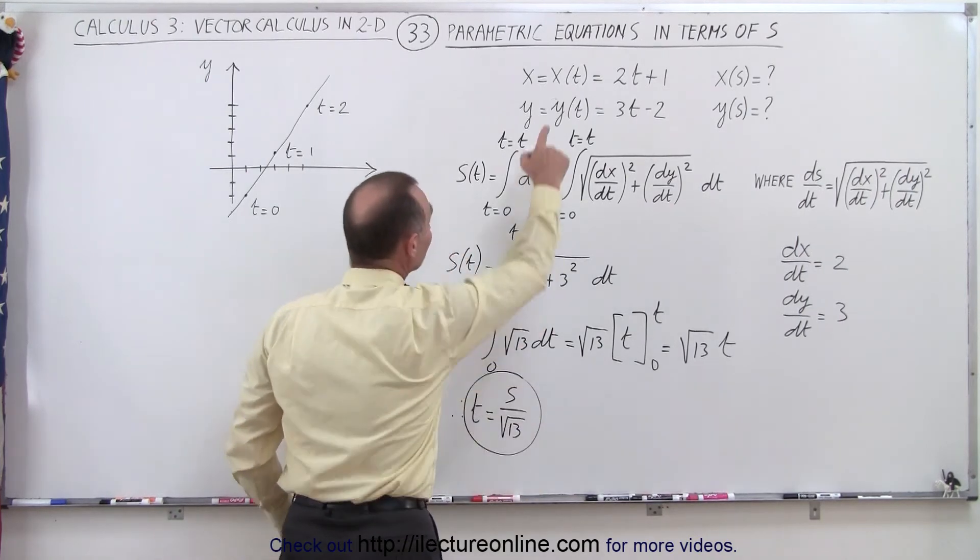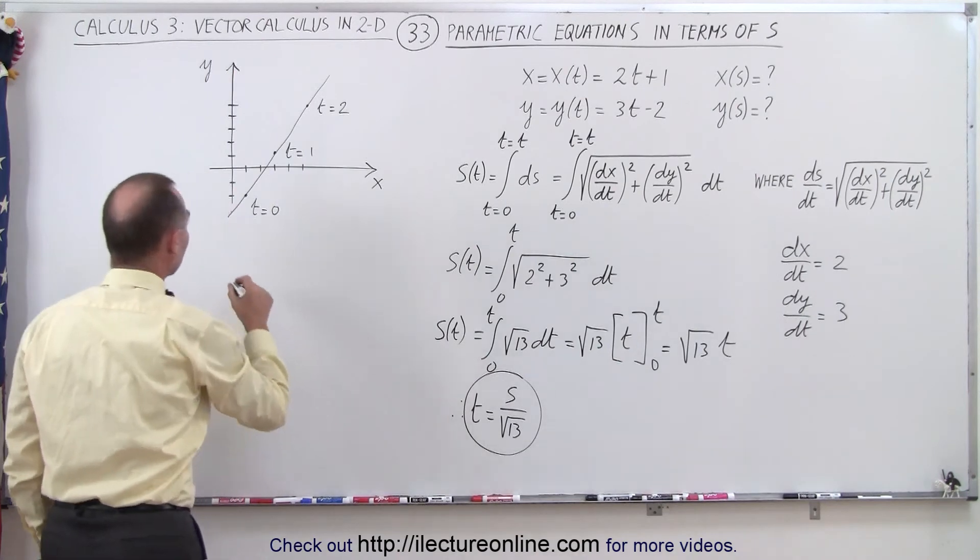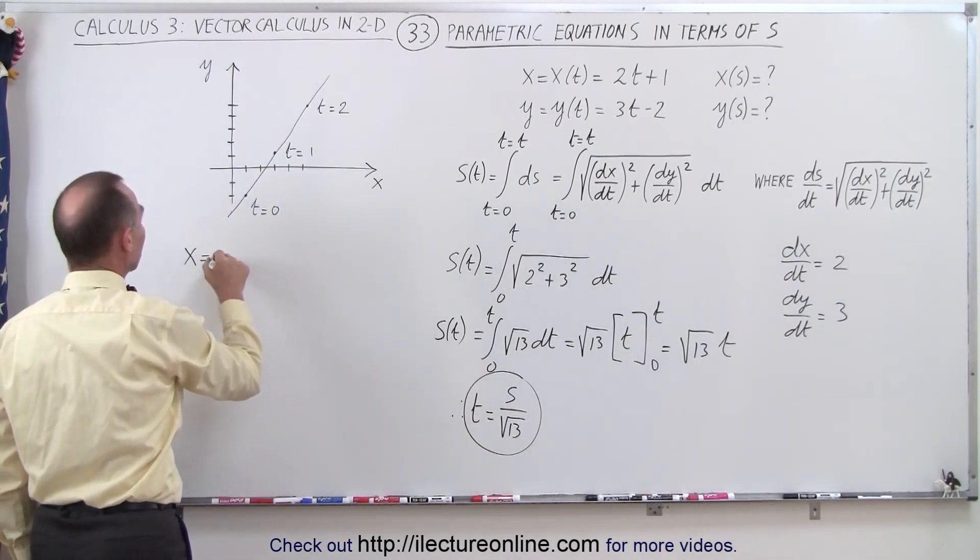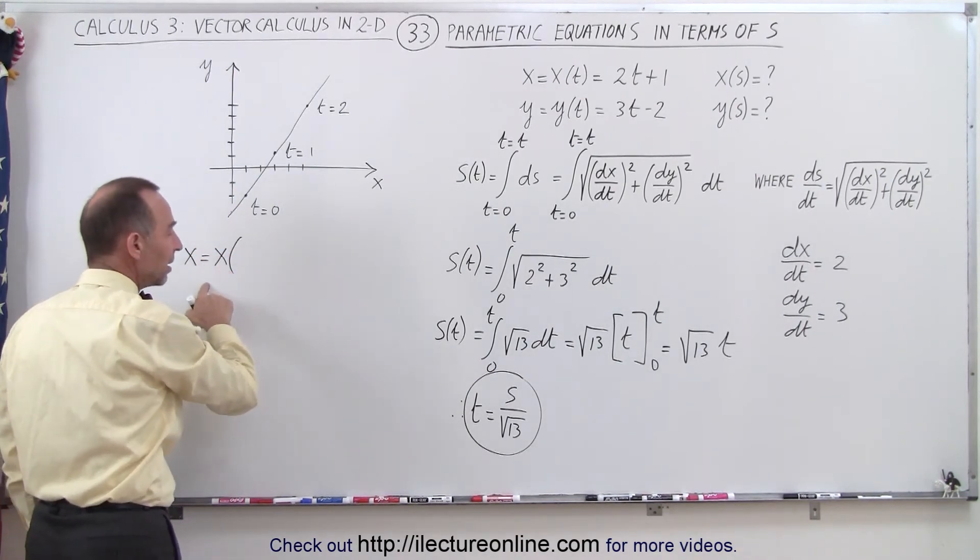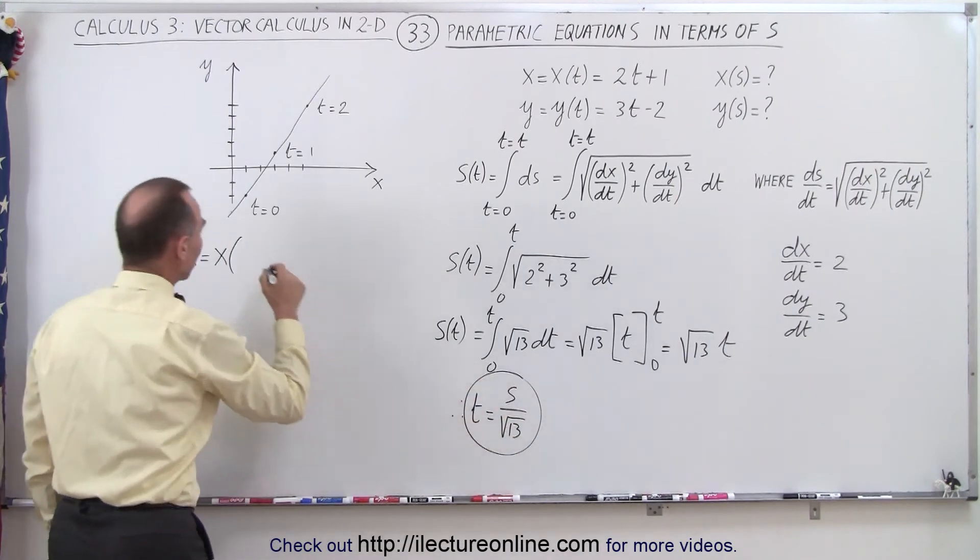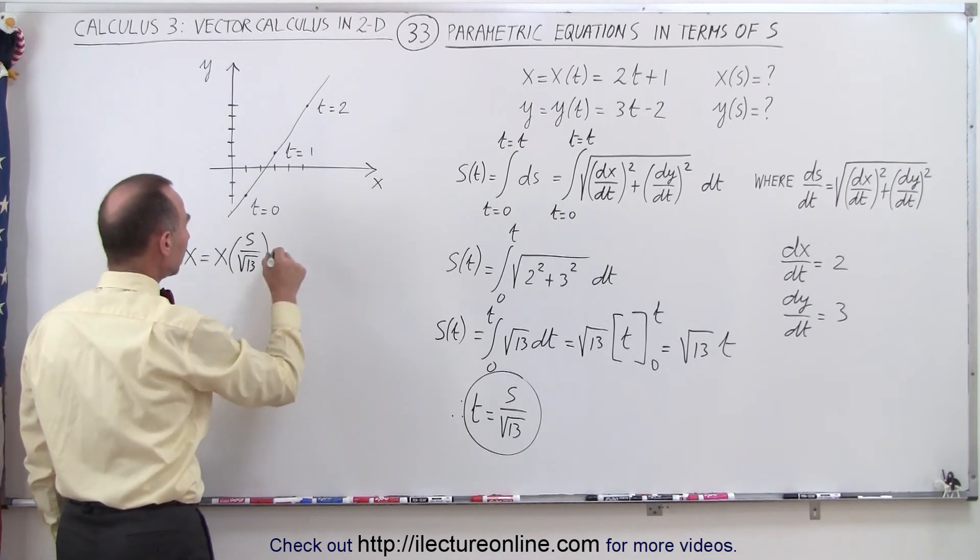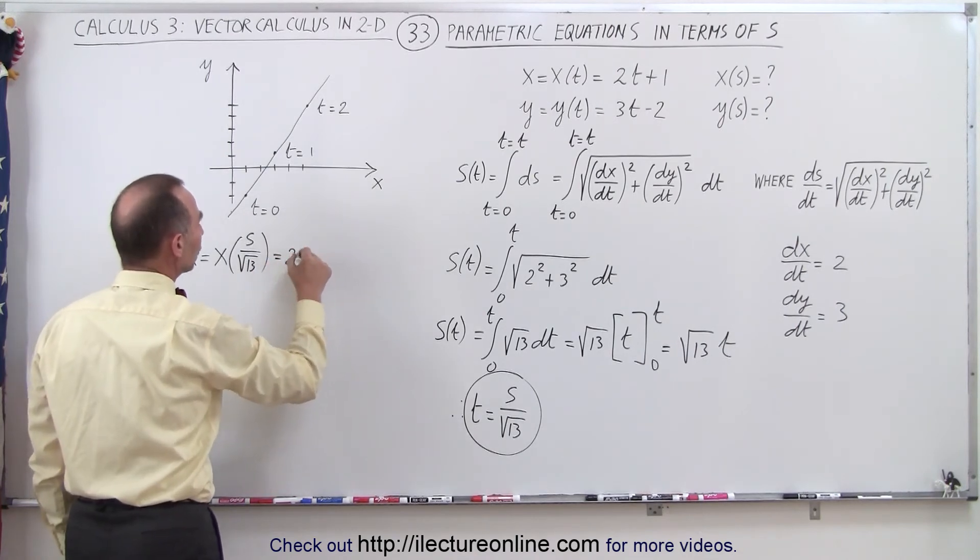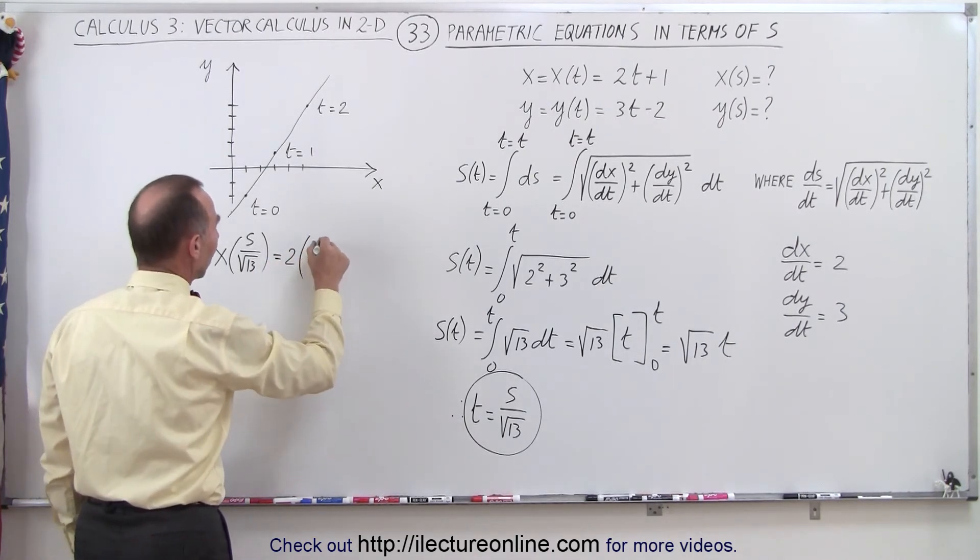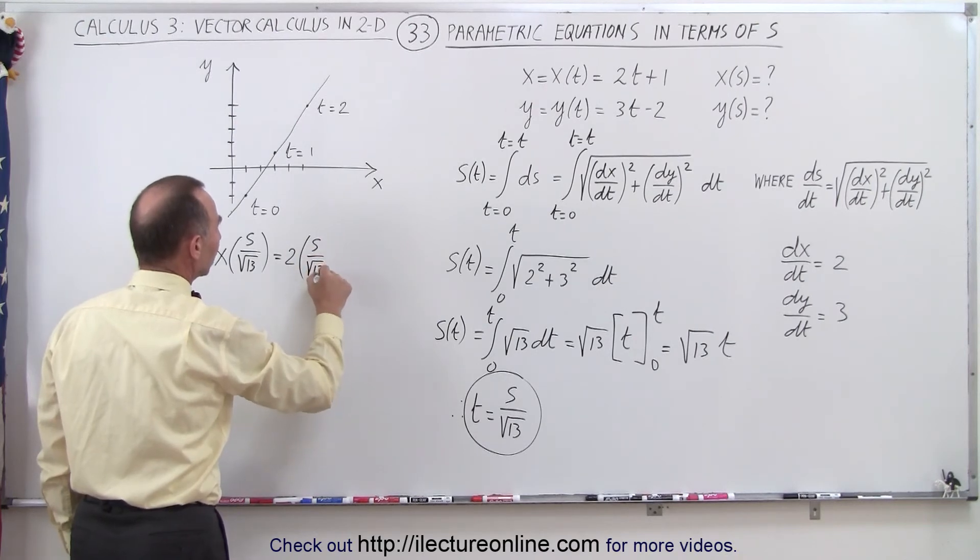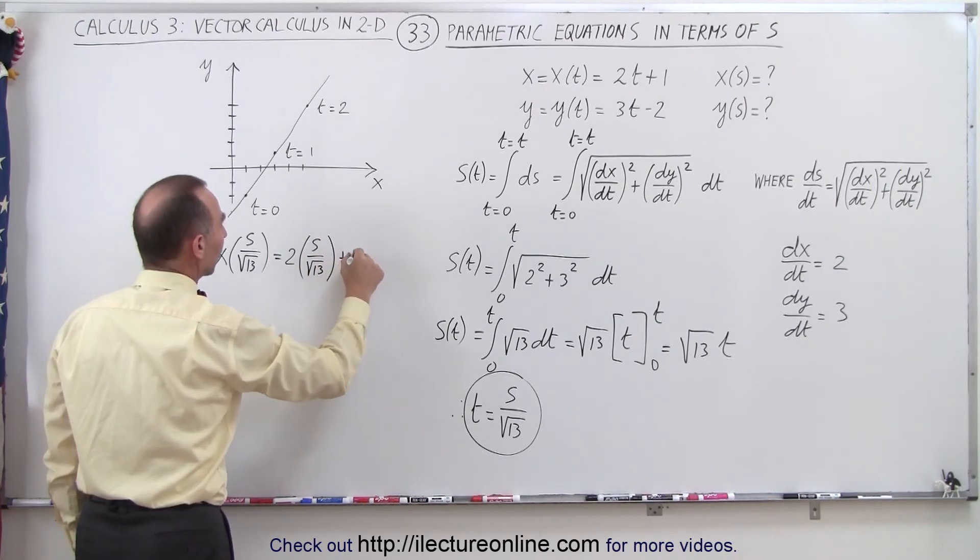And if we do that in each of our equations right there, we could then say that x, which is now equal to x as a function of t, but since t is equal to s divided by the square root of 13, we could say that's equal to 2 times s divided by the square root of 13, plus 1.